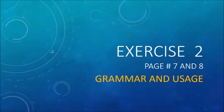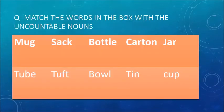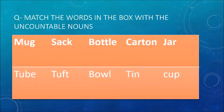The next exercise is again from your book Grammar and Usage, pages 7 and 8. The question is: match the words in the box with the uncountable nouns. The list of countable nouns provided is: mug, sack, bottle, carton, jar, tube, tuft, bowl, tin, cup. In this exercise we will learn how uncountable nouns can be counted in terms of estimation with the help of countable nouns — these countable nouns help us make an estimation about the quantity of uncountable nouns.